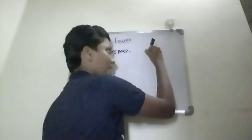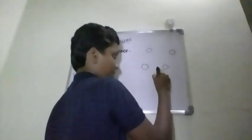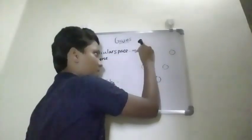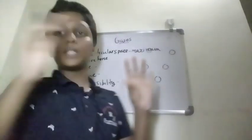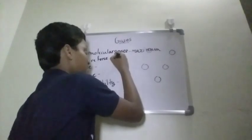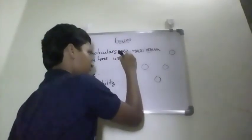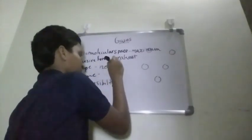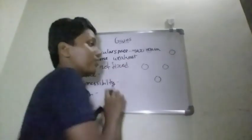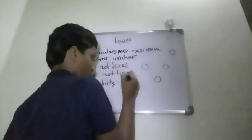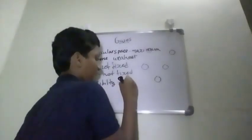Next, let us look into gases. Gases have a high intermolecular space — in fact, the maximum intermolecular space. Next, cohesive force is the least — the weakest cohesive force. And next, shape — not fixed. Gases don't have a fixed shape. What about volume? Volume is also not fixed — no fixed volume.